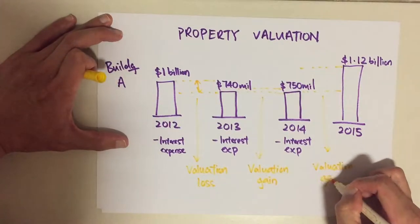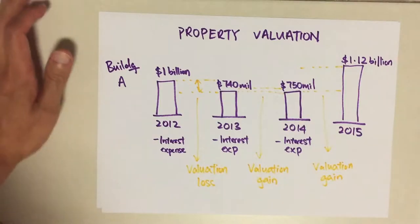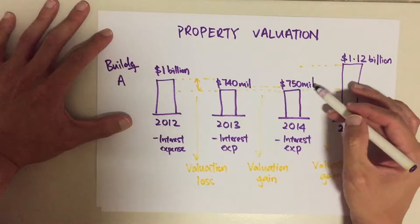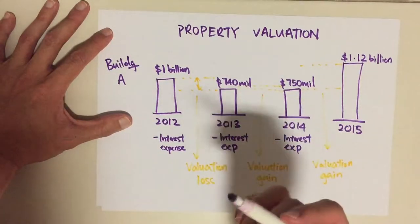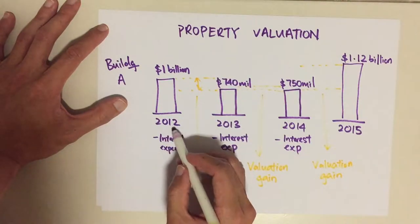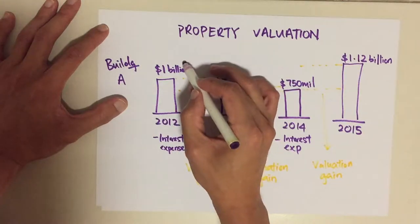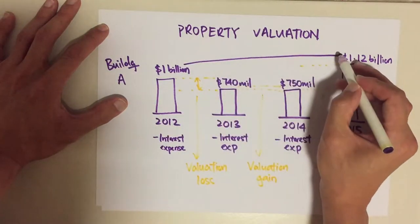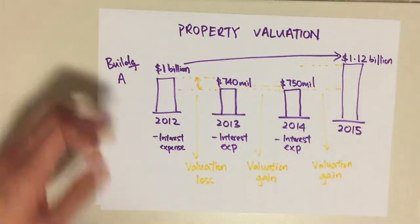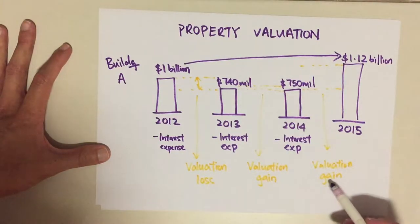So did our REIT manager really do well? Well, from here to here, yes, it did well. Often what I would do to double-check is finding out the year that they purchased this building — it was at 2012 — and I measured the performance from the purchase to the sale, because that will show me the true performance of the REIT manager, despite all the valuation losses and gains.